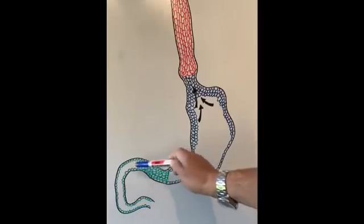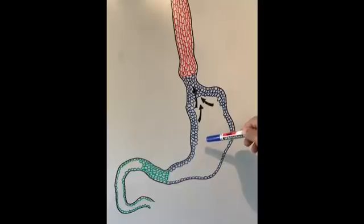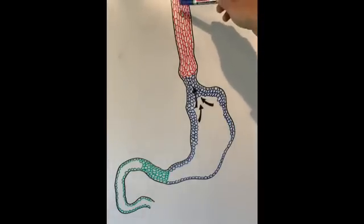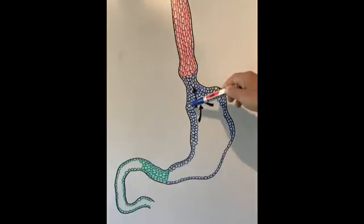So that is the stomach, that is the first part of the small intestine called the duodenum. Now we discuss the anatomy of the digestive system in my first video in the series, so please have a look at it if you have not watched it already to make things a bit easier.